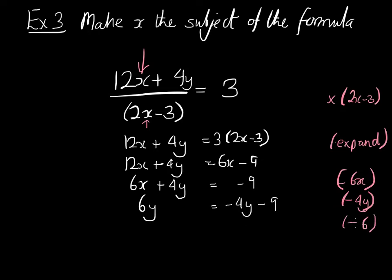And we're going to get that y is equal to negative 4y subtract 9 all divided by 6. And there you go. Y is now... Sorry, I've made a tiny little mistake here. This was it. I don't know why I changed that to y at the last minute. This is x here. And this will be x. So x is now the subject of this formula. And we're done.